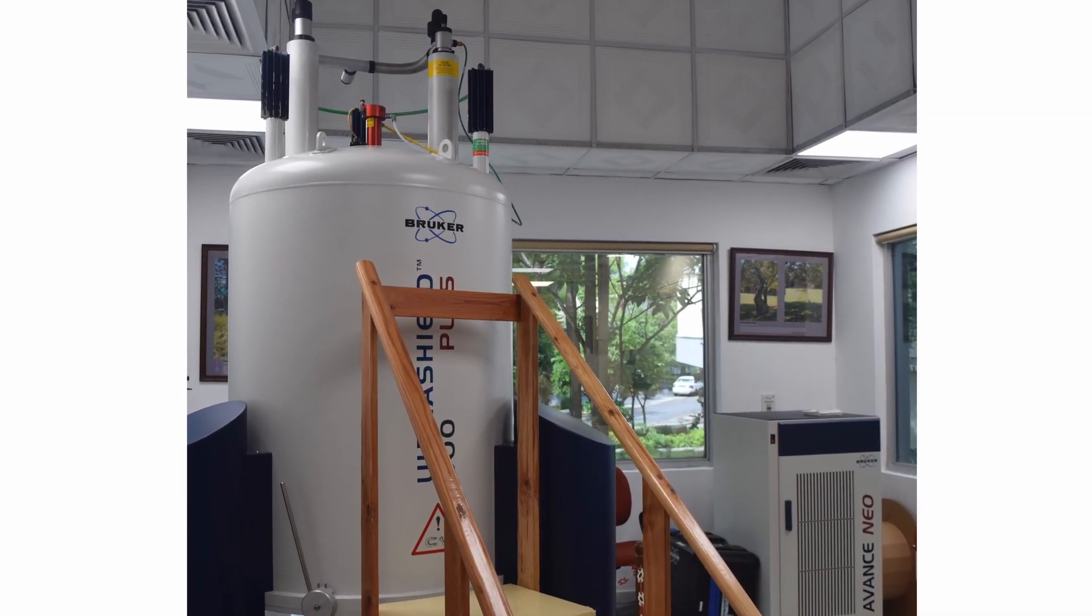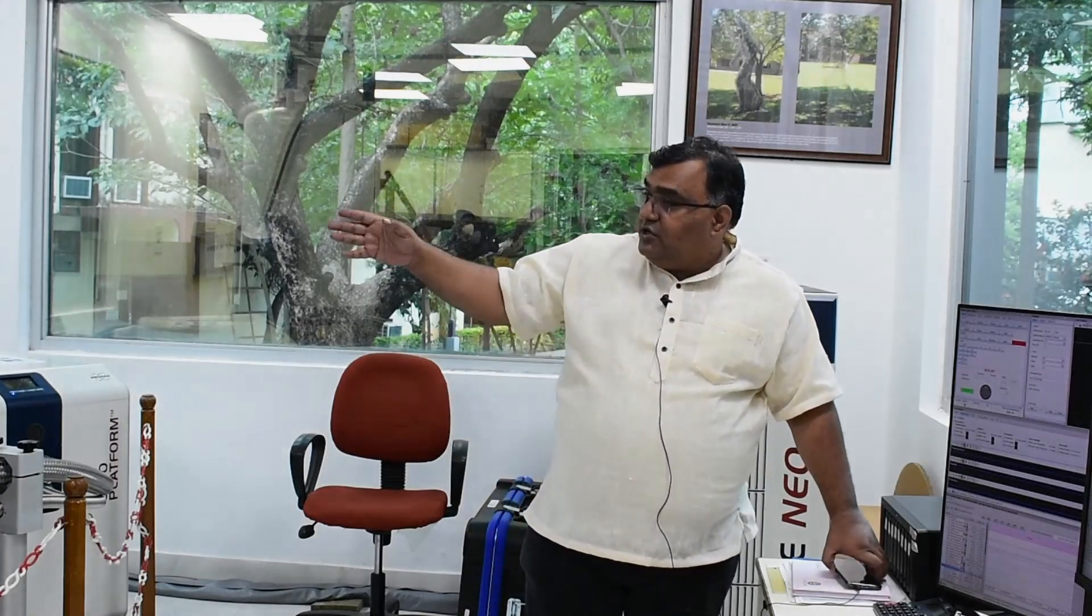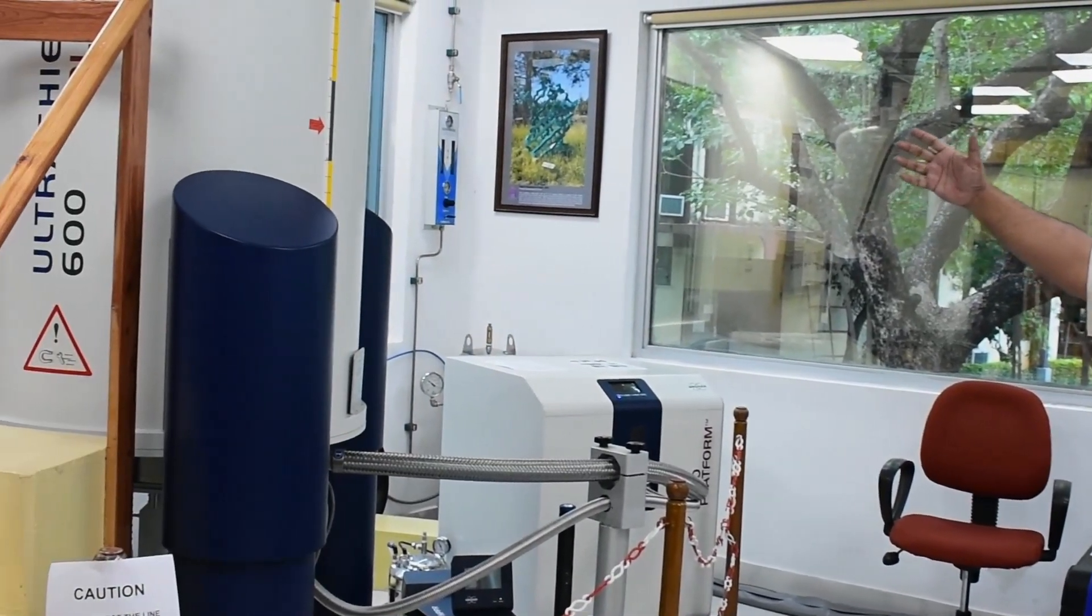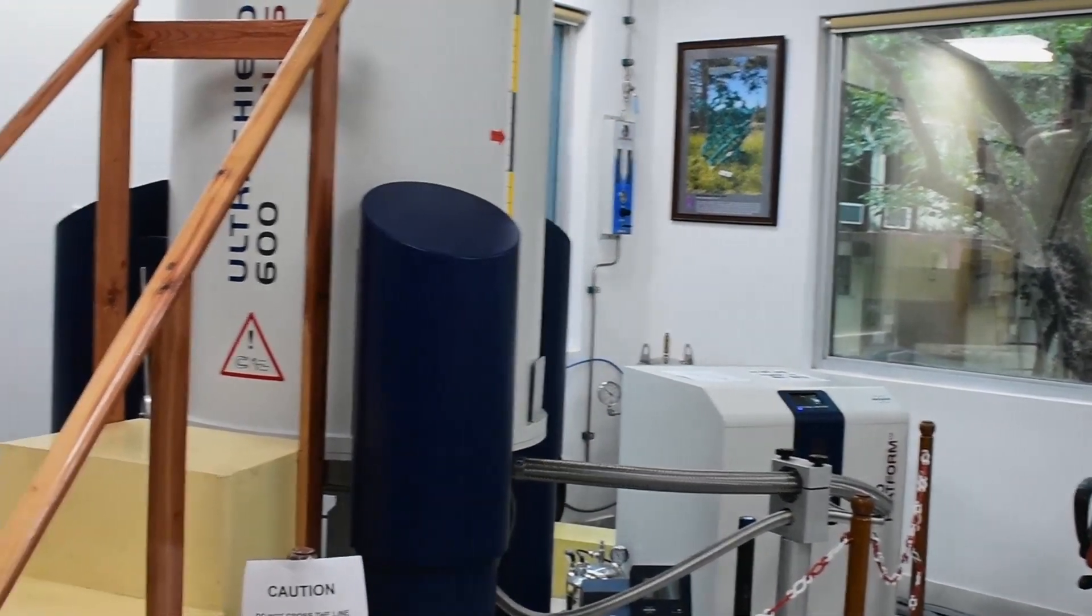Let us understand what an NMR spectrometer consists of. Hi, this is Dr. Mandar Deshmukh. I am a scientist at CCMB and I use NMR spectroscopy. Here you can see there are three components of NMR spectroscopy. One is this magnet, and if you see this is a big barrel-like structure in grey color, resting on three legs.